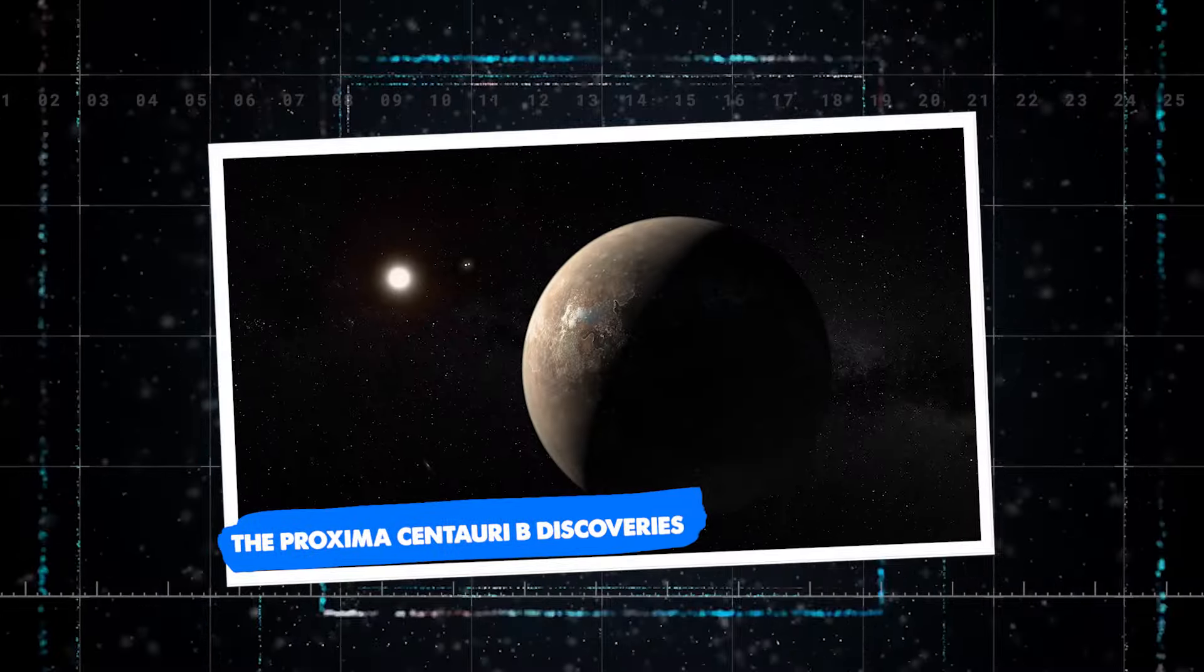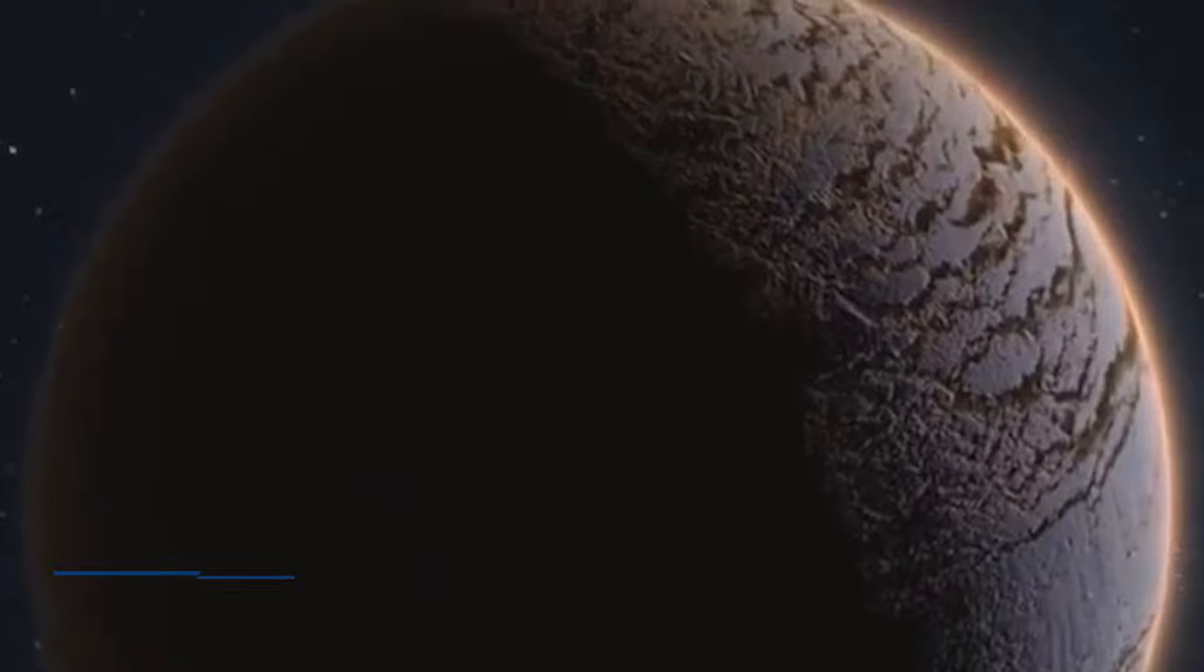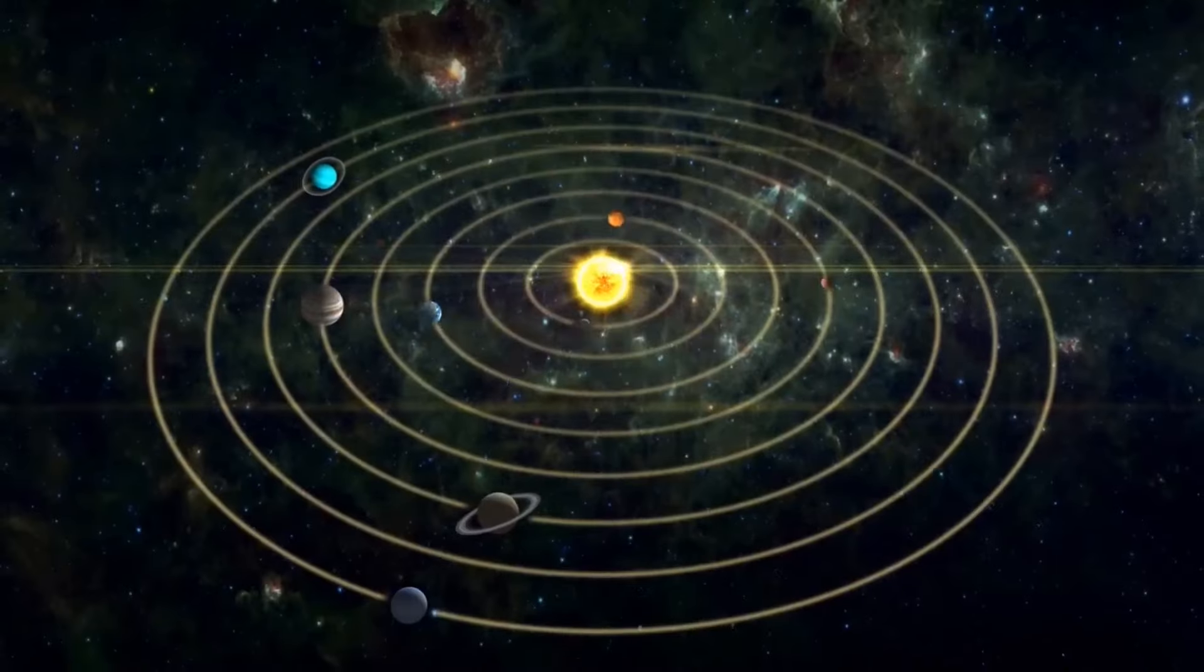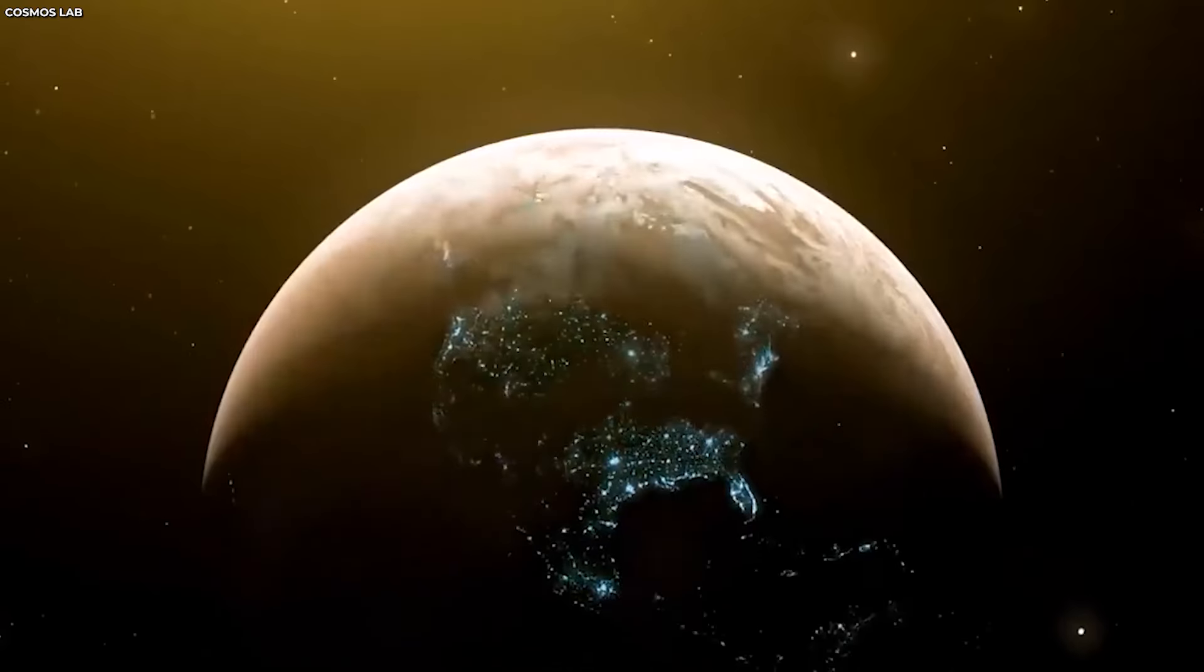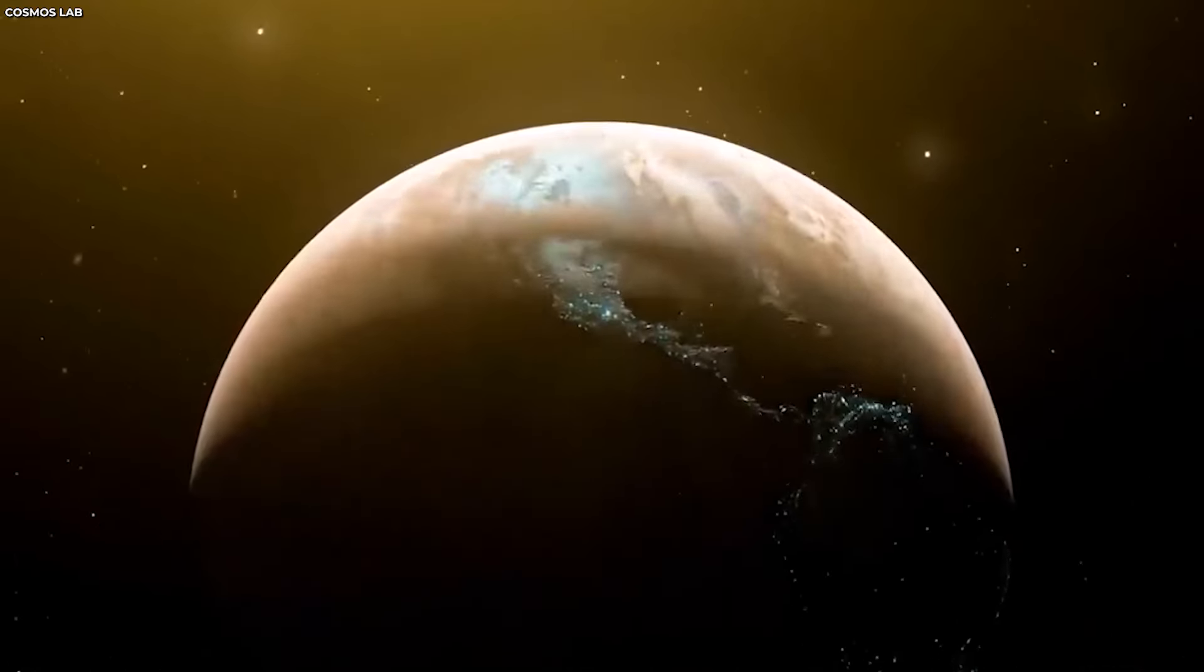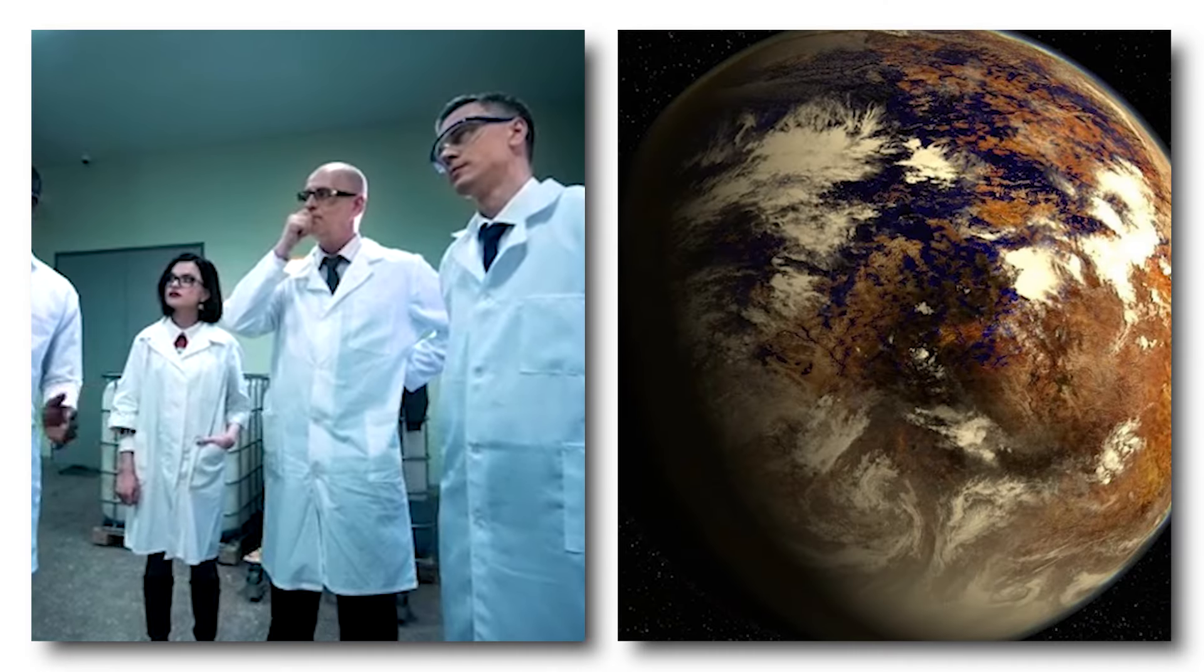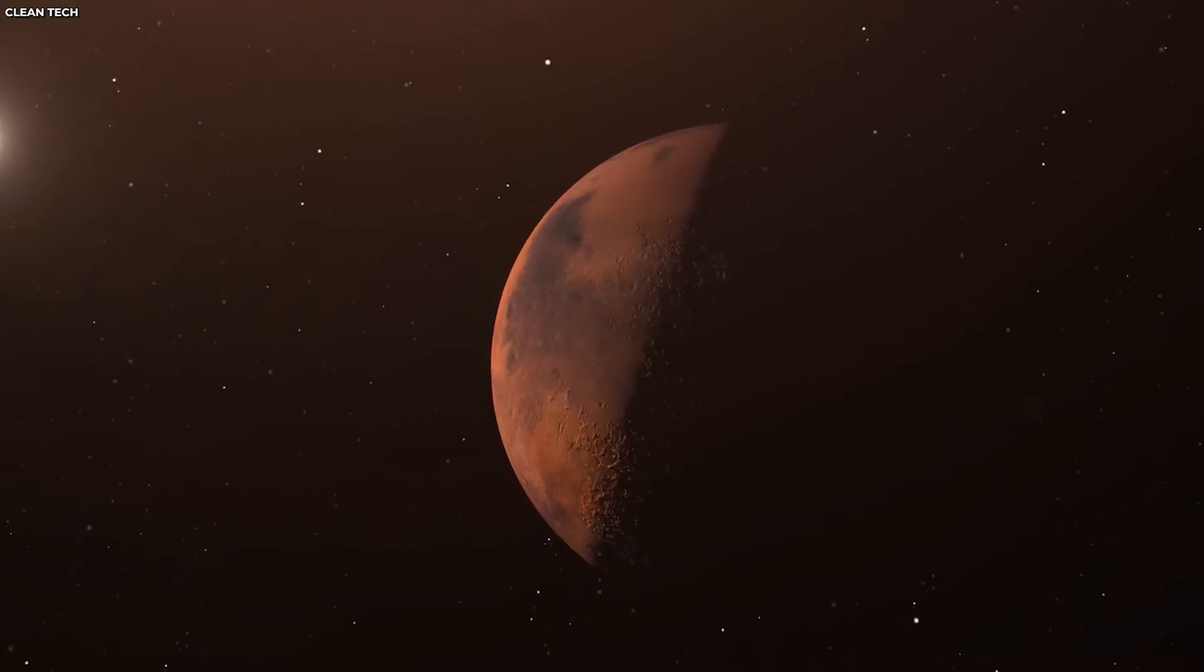The Proxima Centauri b discoveries. The first stop is the exoplanet Proxima Centauri b, which is little more than four light-years away from our own planet. This fascinating world is the nearest known exoplanet to our solar system, as it orbits the red dwarf star Proxima Centauri. Since its discovery in 2016, scientists have been captivated by Proxima Centauri b because of its location within the habitable zone of its star.